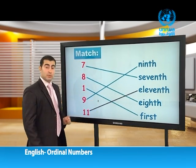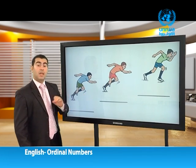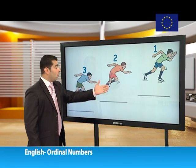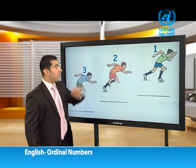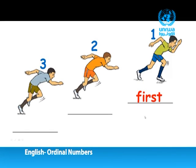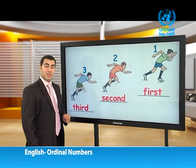Now, dear students, let's look at these boys in the race. We have three boys — number one, two, and three. Let's order them: number one, we say 'first' — الأول. Two — second. Number three — very good, third. That's nice.